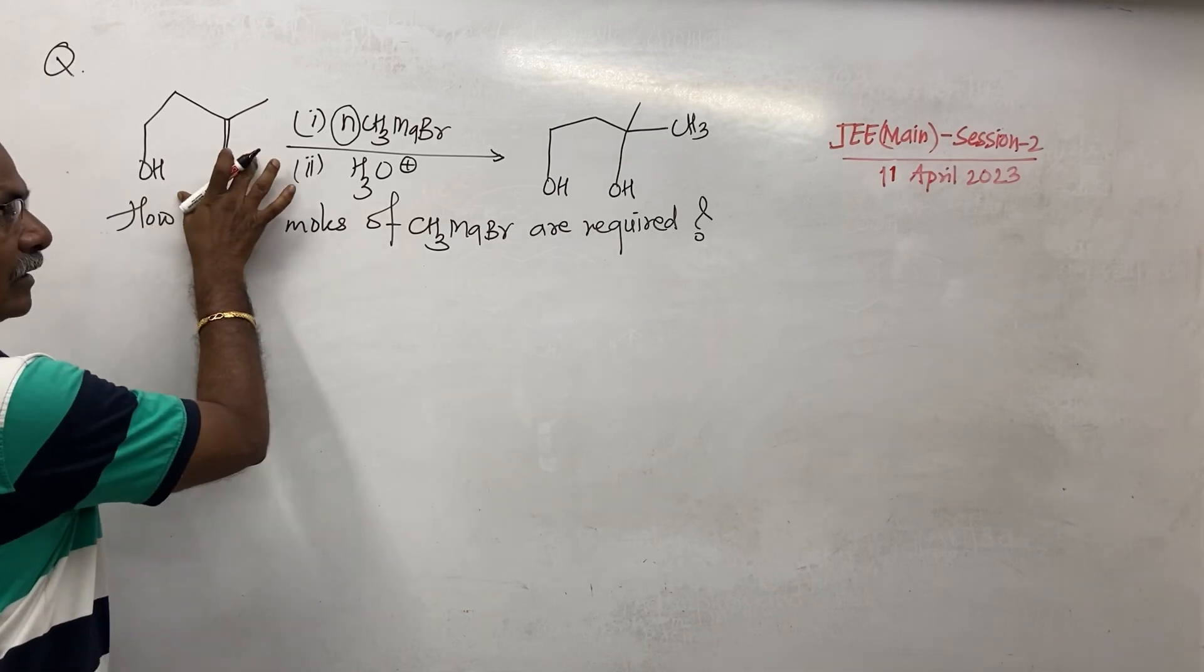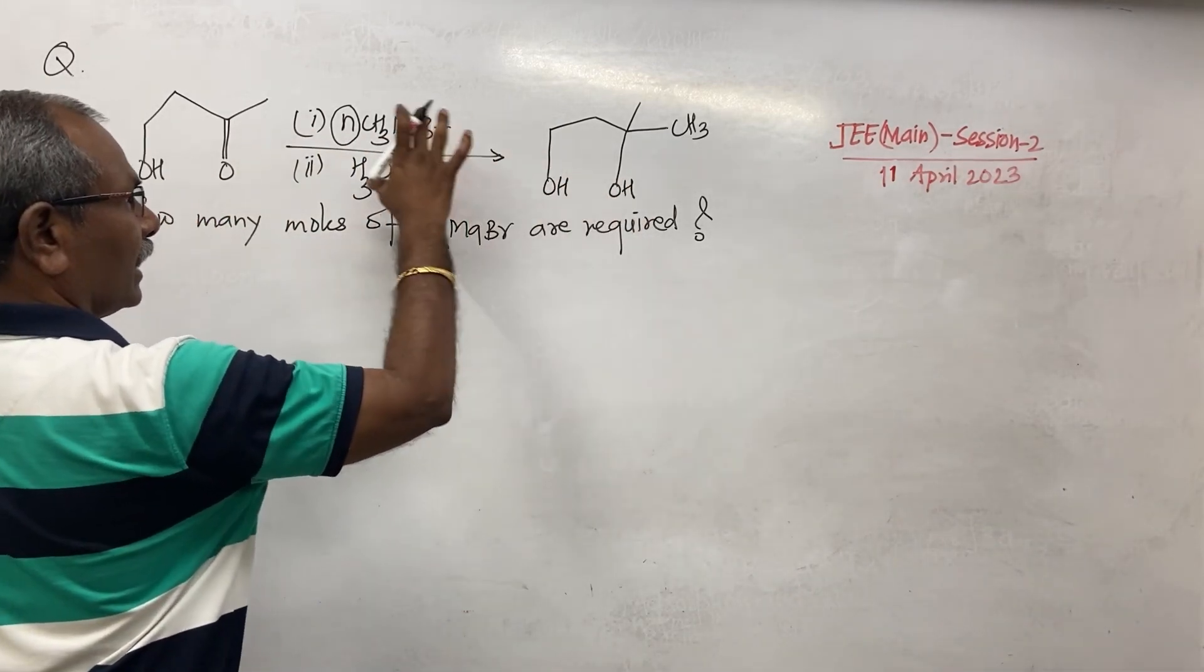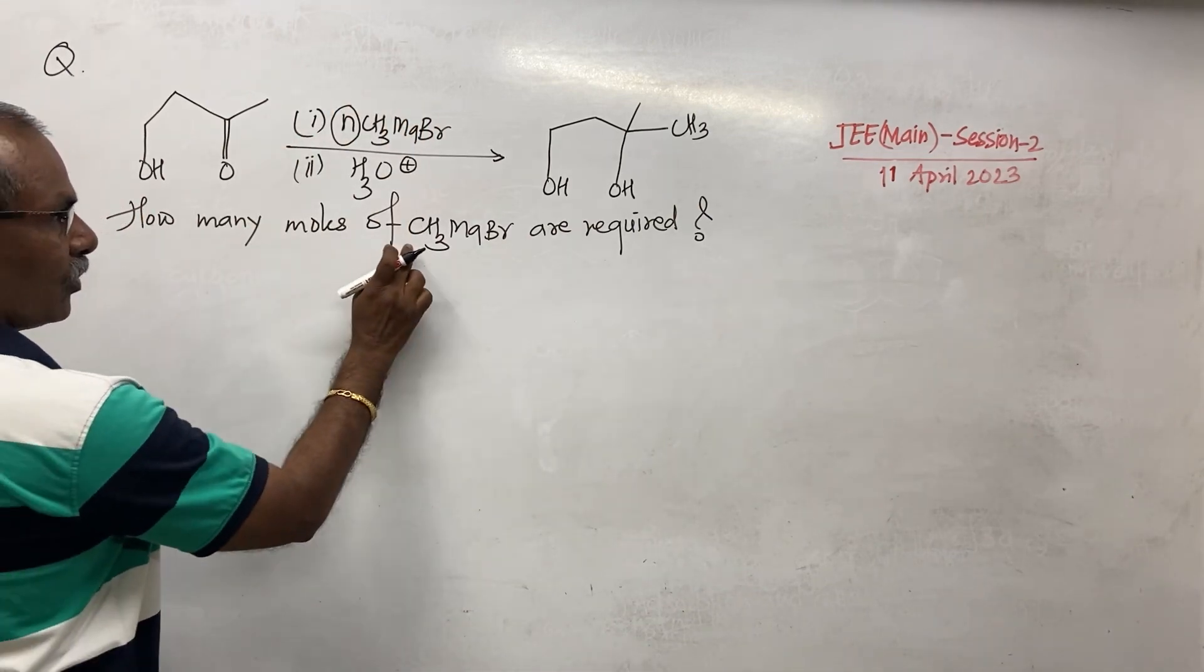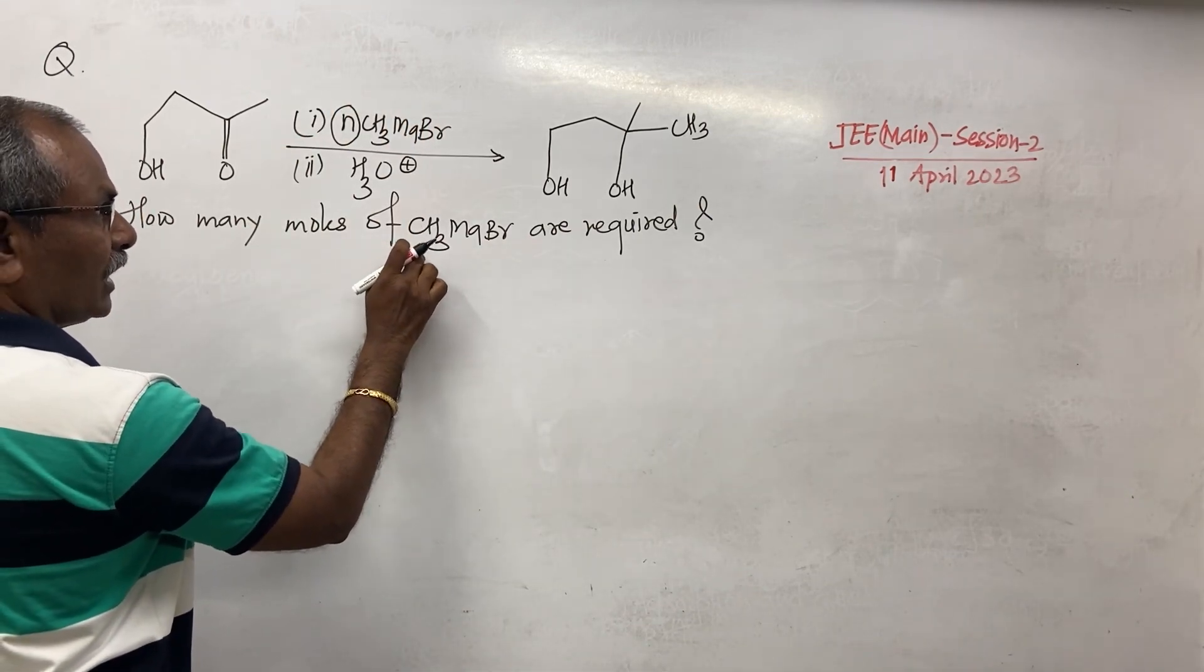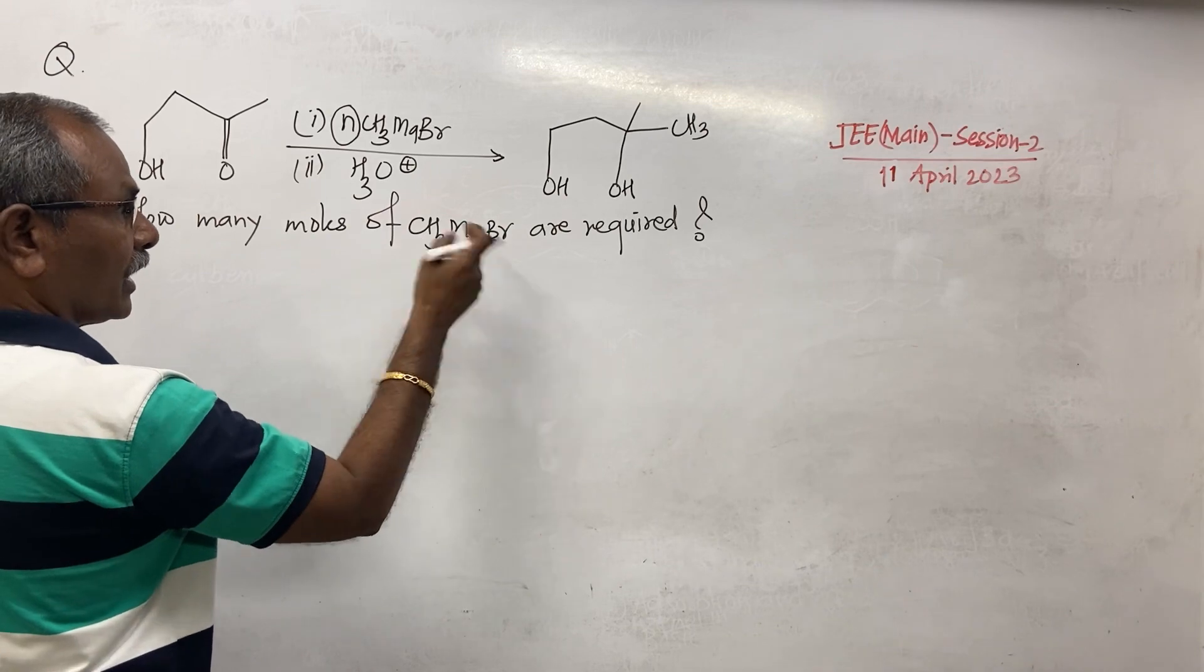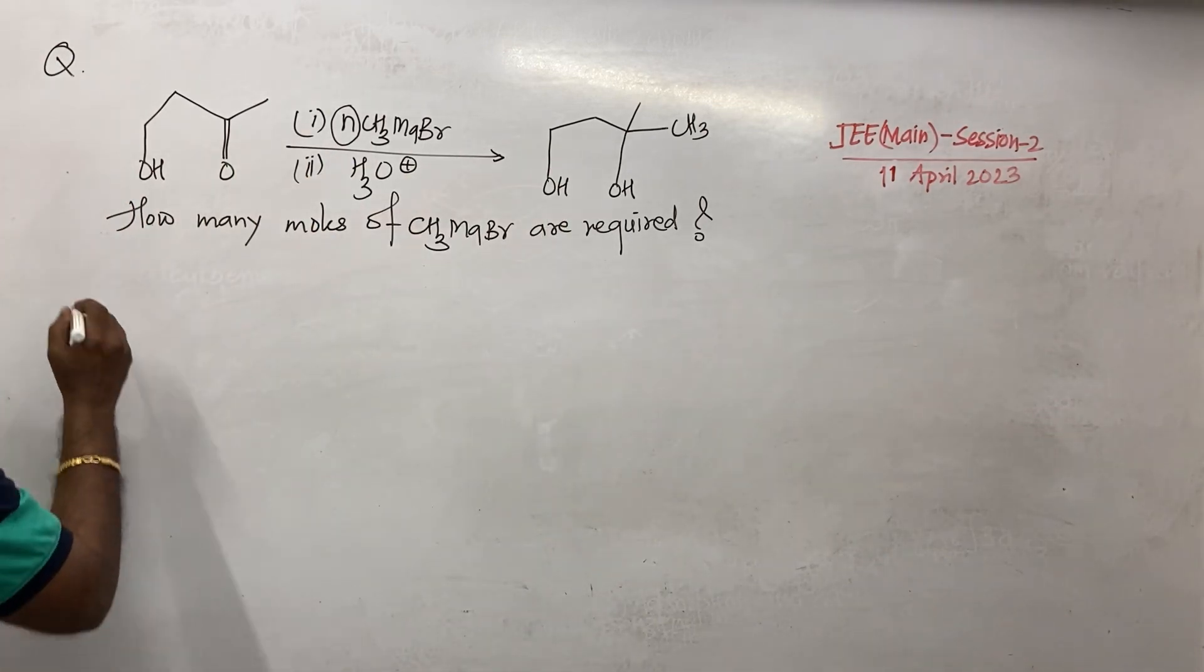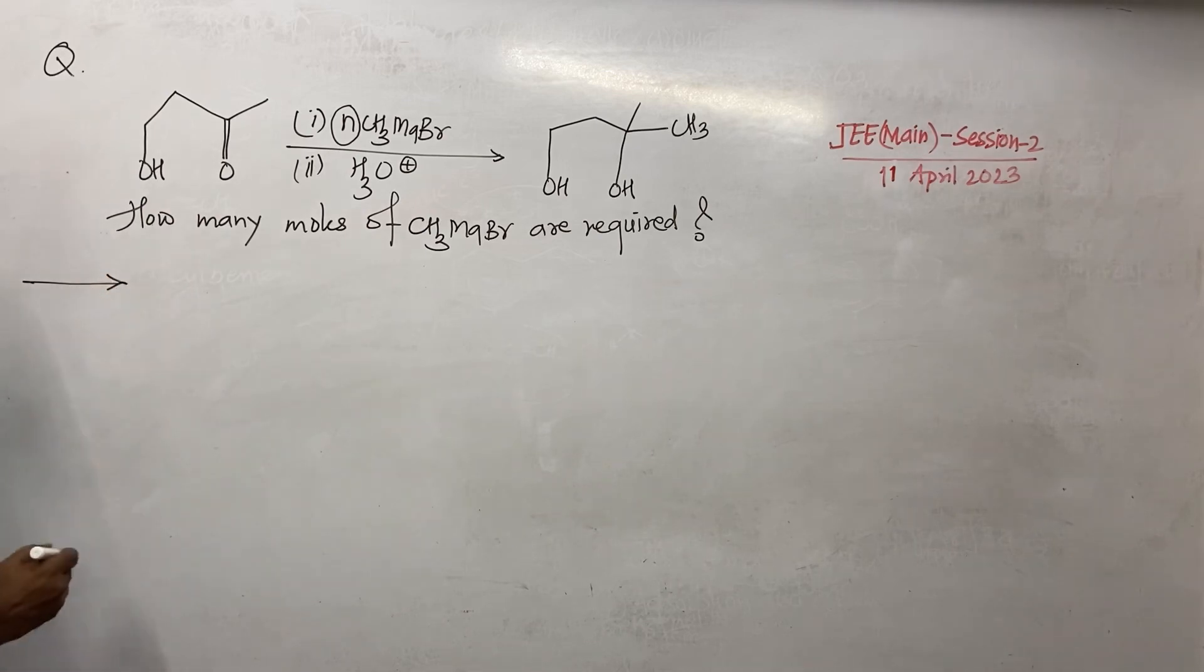So this is the reactant, this is the product and these are the reagents. And you have to find out the number of moles required to convert this reactant into product. Now let us see this reaction.